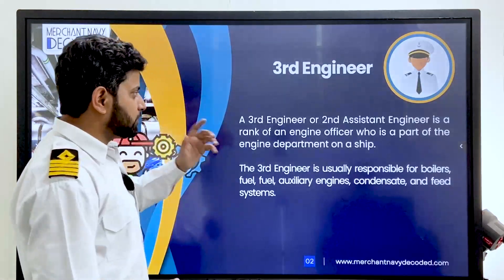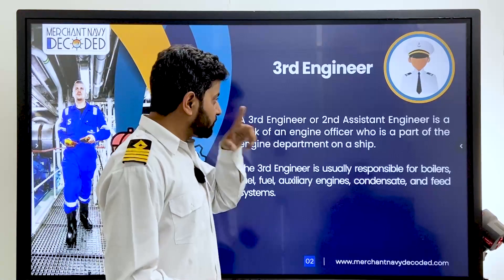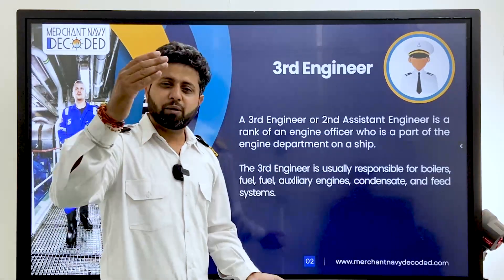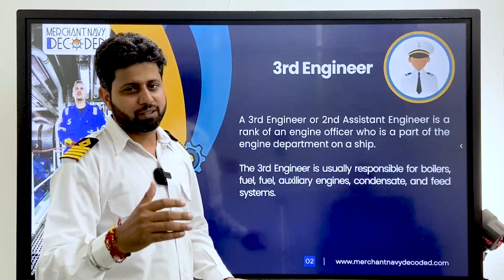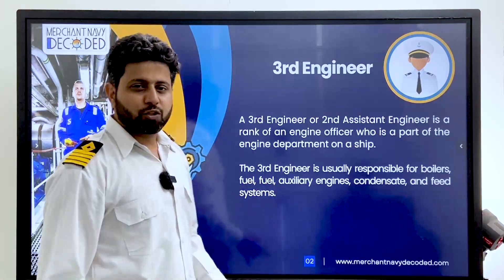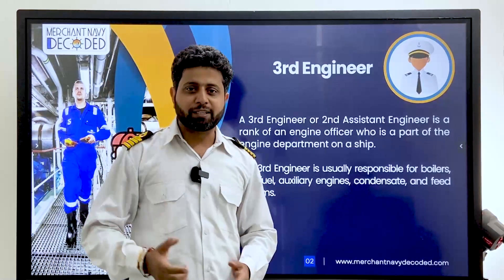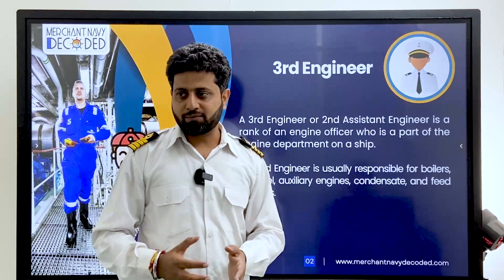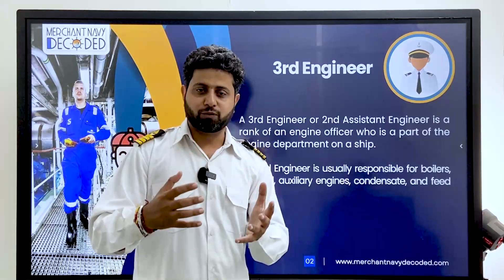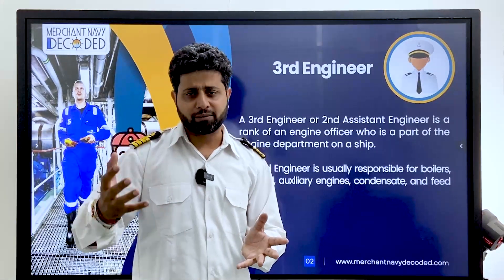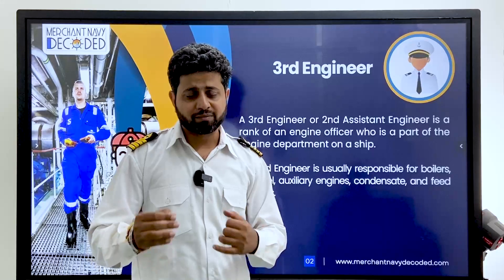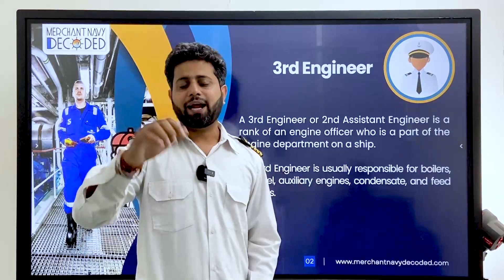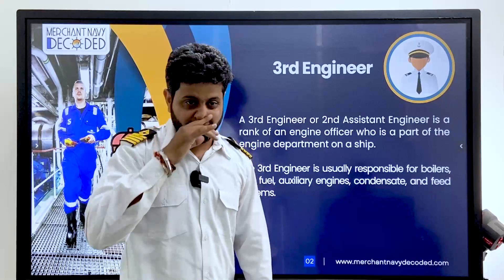Third engineer — second assistant engineer — is the rank of the engineer officer who is part of the engineer department on a ship. Below second engineer comes third engineer, below third comes fourth engineer. For becoming a third engineer you just have to clear your MEO class four exams. Once you become a fourth engineer, you do 12 months or 18 months as fourth engineer, get good appraisals, you don't have to clear any MEO exams, and you become third engineer on board ship itself.